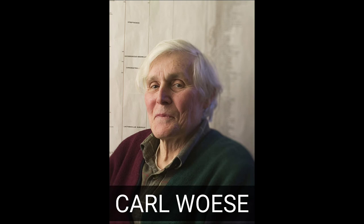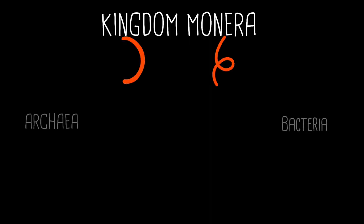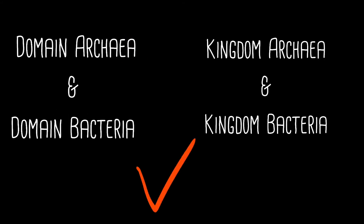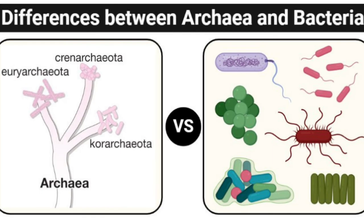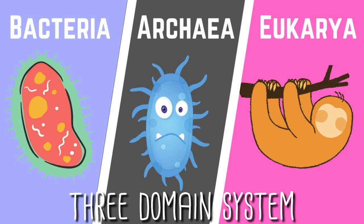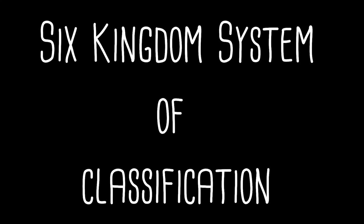Carl Woese proposed a modification of the Monera kingdom after finding that bacteria have different types of metabolism. He proposed dividing them into two large groups which he named Bacteria and Archaea, transforming the Monera kingdom into two domains. This was proposed by Woese in 1977 when he noted differences between Archaea and Bacteria at the level of ribosomal genetics. He kept the rest of the kingdoms together in one domain: Domain Eukarya. This system is also known as the three domain system of classification or six kingdom classification.